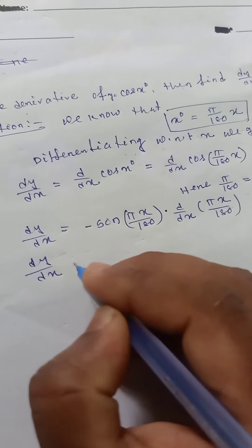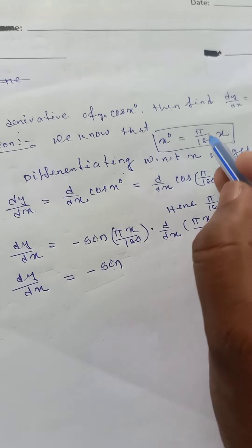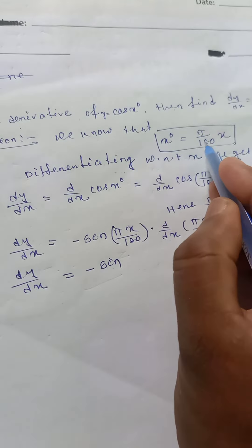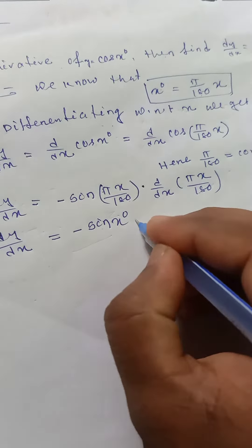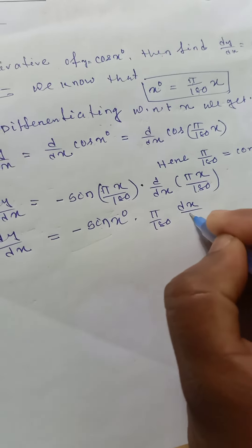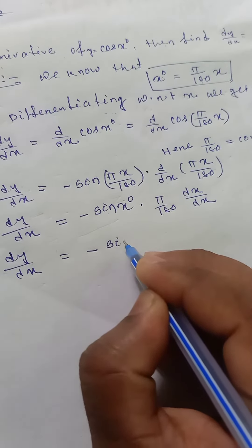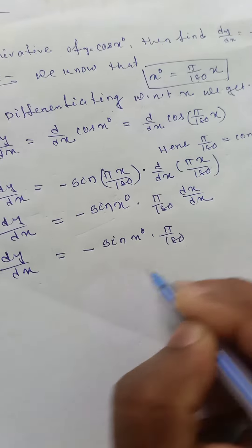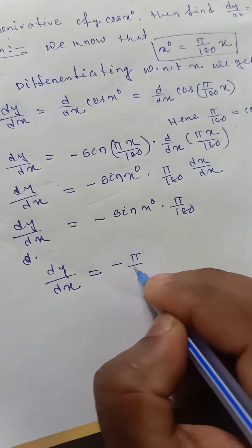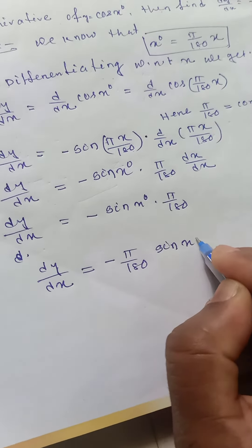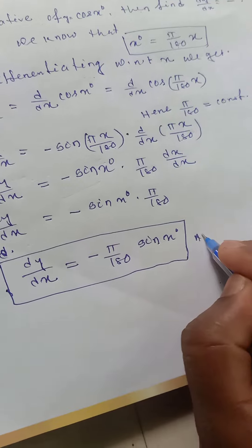So dy/dx = -sin(πx/180°), and πx/180 is nothing but x°. Since π/180 is constant, d/dx of (π/180 · x) = π/180. Therefore, dy/dx = -sin(x°) · π/180. The final answer is dy/dx = -(π/180) · sin(x°).